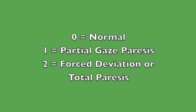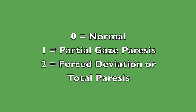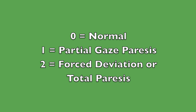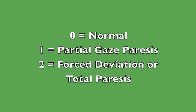To review, here are the correct levels as shown in the doc flow sheet. If there is partial limitation of eye movements, score a one. If there is complete absence of eye movements or a forced gaze deviation, score a two.